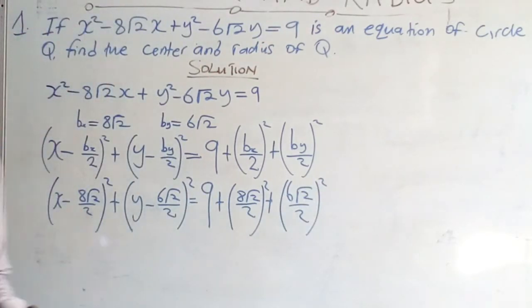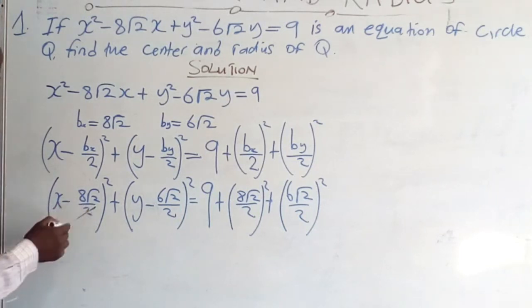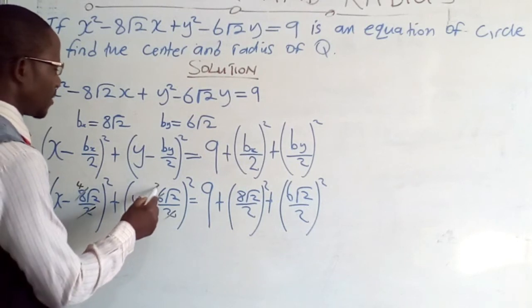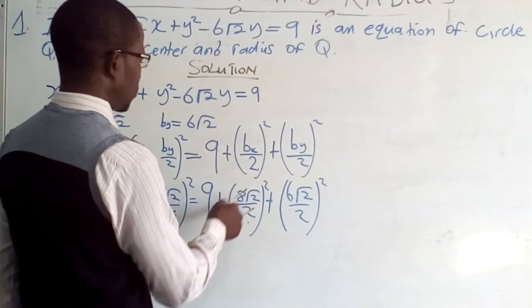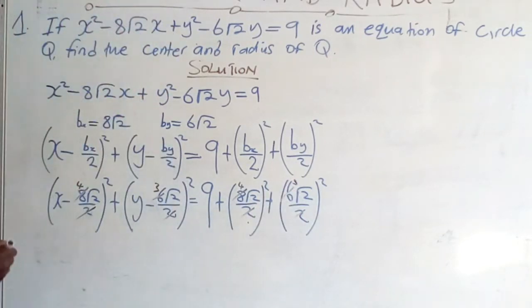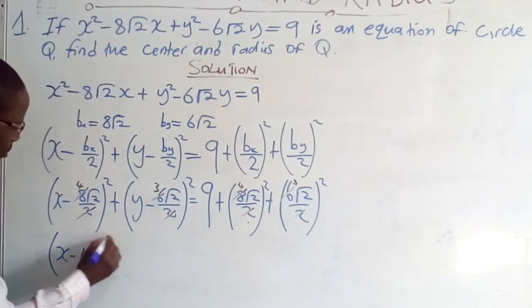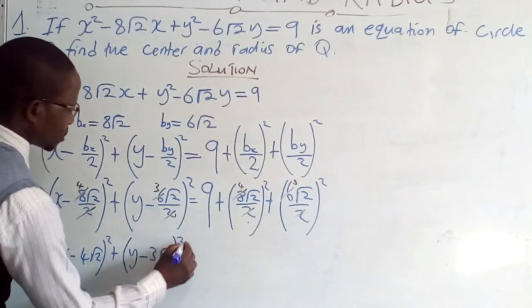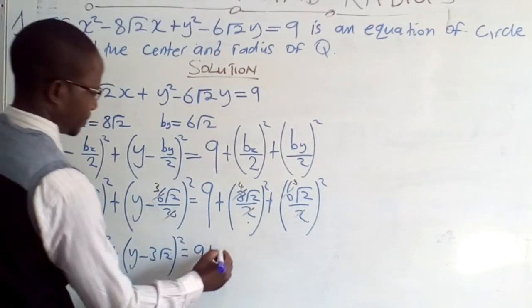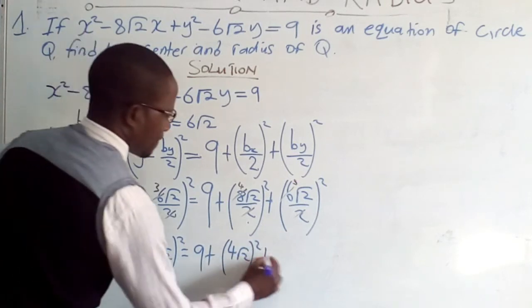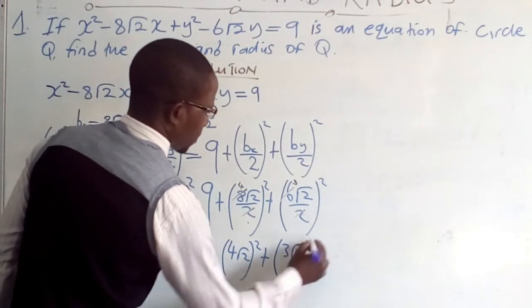These 2s divide: 2 into 8 goes 4 times, and 2 into 6 goes 3 times. So what we have next is (x − 4√2)² + (y − 3√2)² = 9 + (4√2)² + (3√2)².